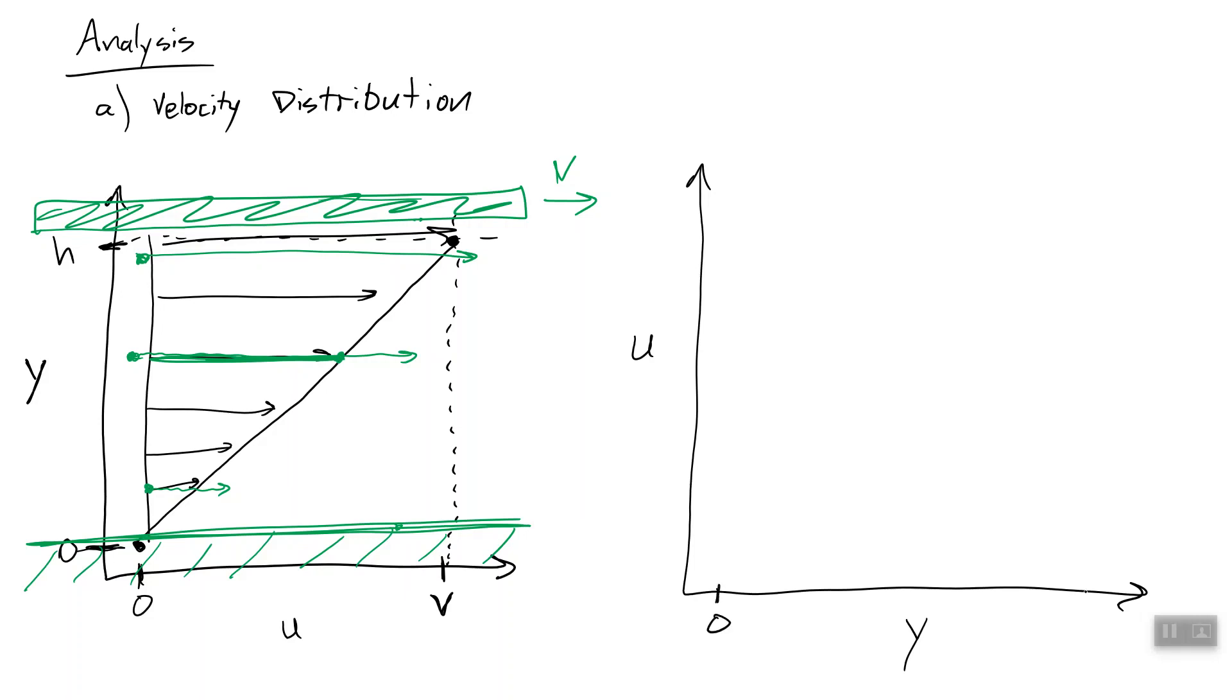So now this will go from 0 to h, the height of our fluid. This will go from 0 to v, the velocity of our moving plate. It is, again, a linear velocity profile. So it's actually going to look exactly the same. But you see that we've switched our axes.